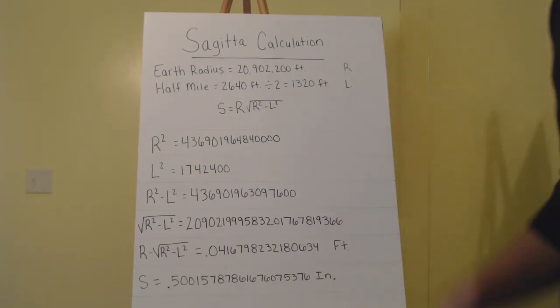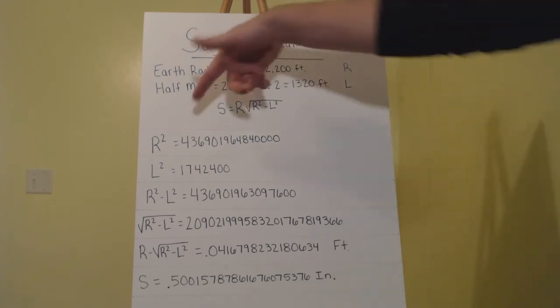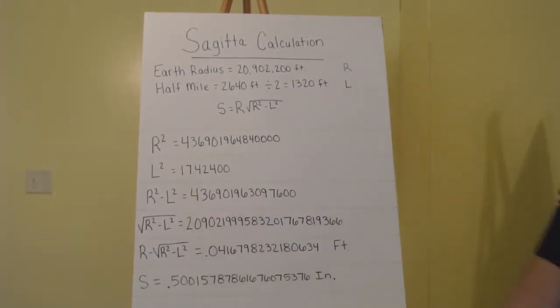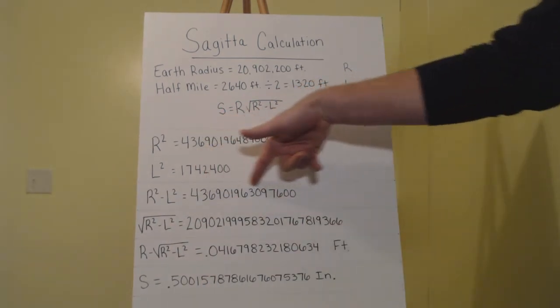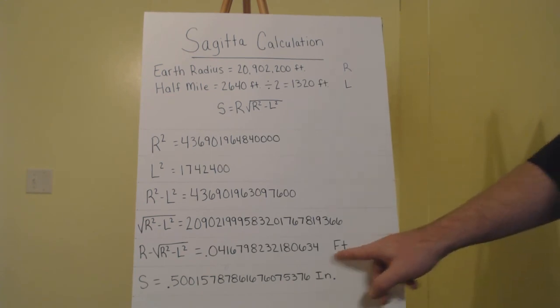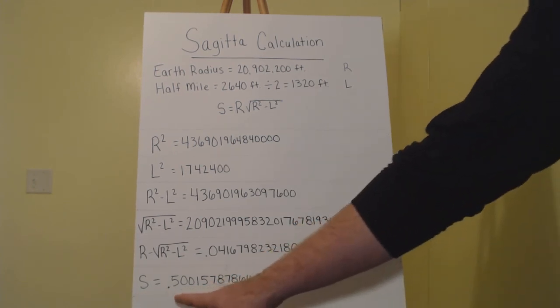So here we have our sagita calculation. We have the earth's radius in feet. We have a half mile, so 2,640 feet, but we're only taking half of that for our input for L, so we have 1,320 feet. Here's the equation we're going to be doing. We got all the numbers out to the full decimal places, so we got some big numbers. But if we square R, the radius of the earth, we come up with this. If we square L, which would be half of a half mile, we get that. If we take R squared minus L squared, we come up with this number here. If we take the square root of R squared minus L squared, we come up with this. Now if we take the radius minus the square root of the radius squared minus our length squared, that's where it gets fun. We come up with 0.041679 feet. And if we convert that over into inches, we have our sagita measurement of half inch roughly.